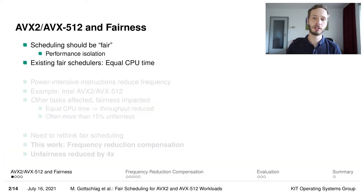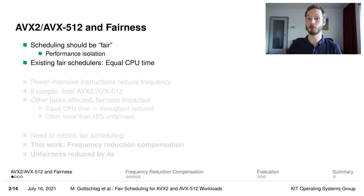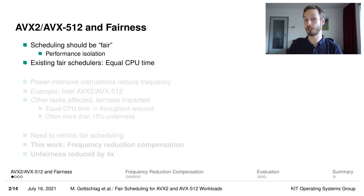It is commonly assumed that scheduling should be fair, that individual tasks should have equal access to the CPU, mainly to provide at least some degree of performance isolation. Existing operating systems commonly allocate equal CPU time to individual tasks, which results in a very high degree of fairness as long as CPU frequencies do not fluctuate too much.